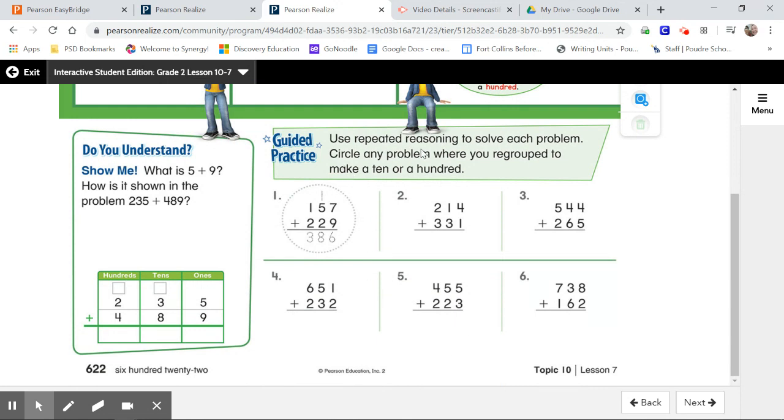So these instructions say use repeated reasoning to solve each problem. Circle any problem where you regrouped to make a 10 or a 100. So that's what we've been practicing for the last week or so. So you're going to go through and solve all six of these problems on your own piece of paper. And then I want you to go back and circle the ones where you regrouped.